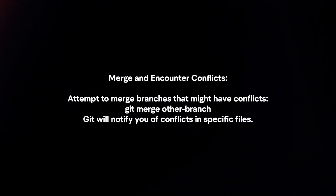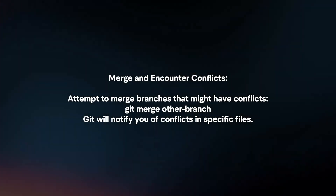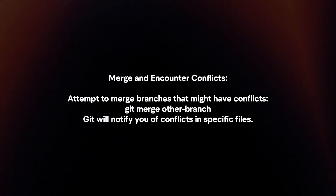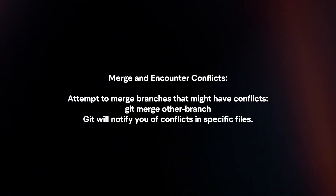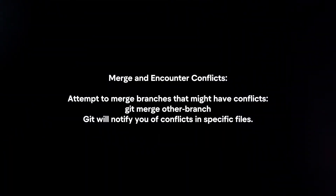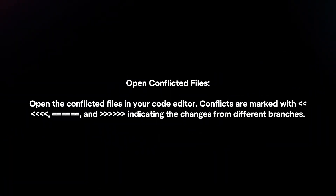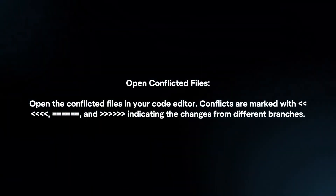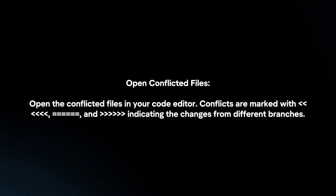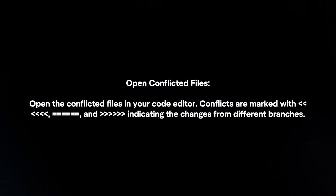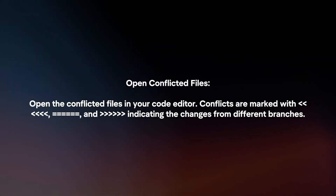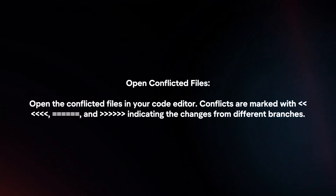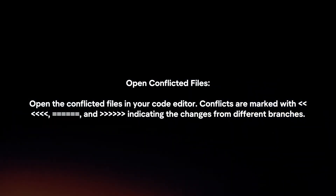Merge and encounter conflicts: attempt to merge branches that might have conflicts. Git will notify you of conflicts in specific files. Open the conflicted files in your code editor — conflicts are marked with symbols indicating the changes from different branches.